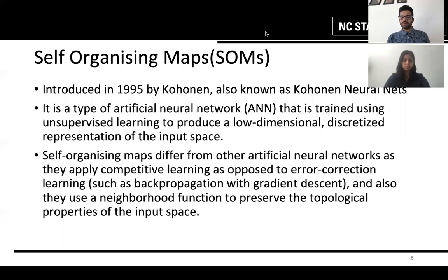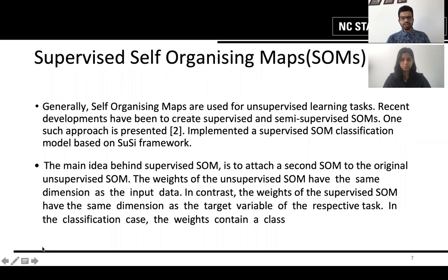SOMs are introduced by Kohan and it is also known as Kohan neural networks. It's a type of an ANN that uses unsupervised learning techniques to produce a low dimensional discretized representation of the input space. SOMs differ from other ANNs as they apply competitive learning for error correction as opposed to backpropagation with gradient descent and also it uses a neighborhood function to learn the topological properties of the input space. Generally, SOMs are used for unsupervised learning tasks but recent developments have been made for creating supervised SOM.